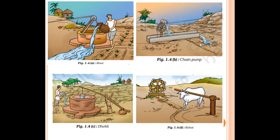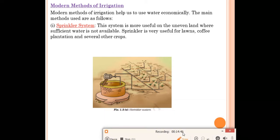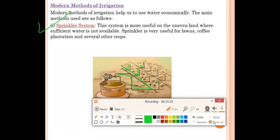Here are pictures of the traditional irrigation methods: moat, chain pump, dhekli, and rahat. Modern methods of irrigation help us use water economically, reducing wastage. The first modern method is the sprinkler system, which is more useful on uneven land where sufficient water is not available. Sprinklers are useful for lawns, coffee plantations, and several other crops. Pipes with attached sprinklers distribute water to crops with very little wastage.